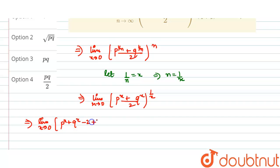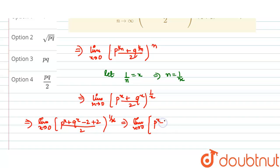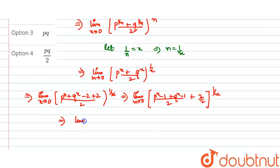Now I take the positive 2 separately and split the minus 2 into minus 1 and minus 1. So I can write the numerator as (p^x minus 1) plus (q^x minus 1) divided by 2, plus 2 divided by 2, raised to the power 1 by x. This becomes limit x tends to 0 of [(p^x minus 1)/2 + (q^x minus 1)/2 + 1] raised to the power 1 by x.